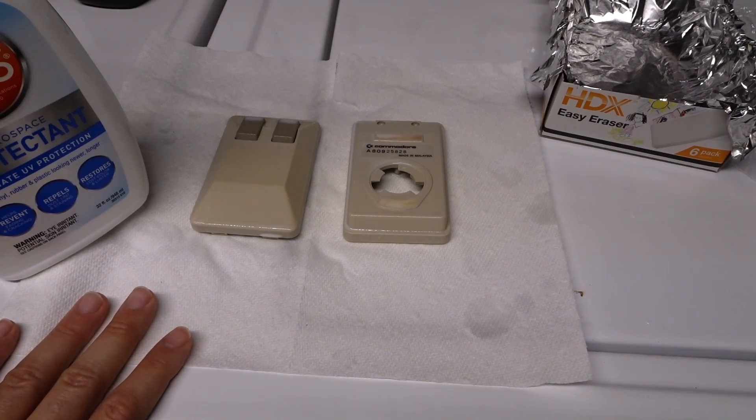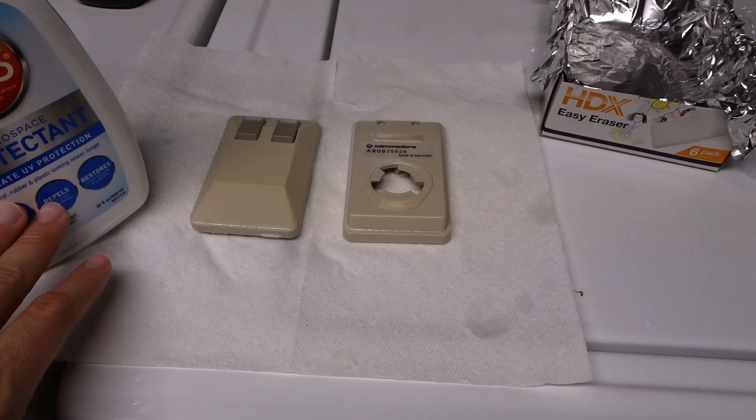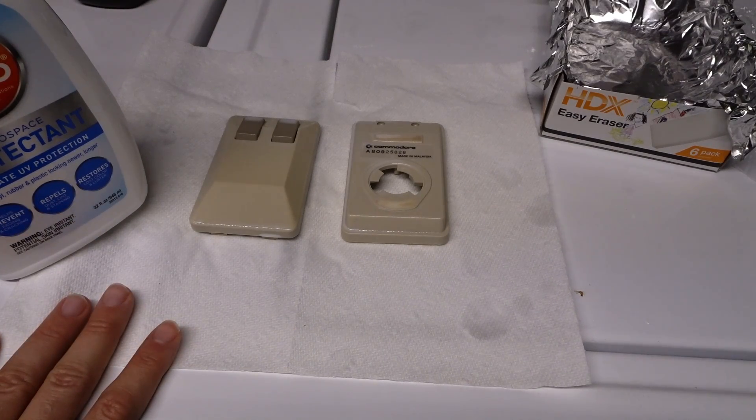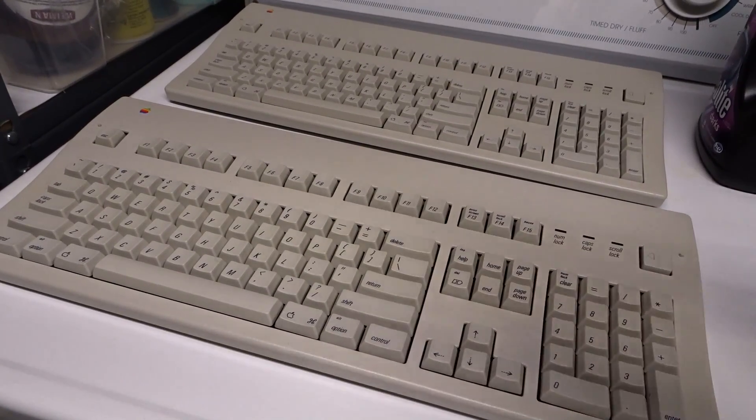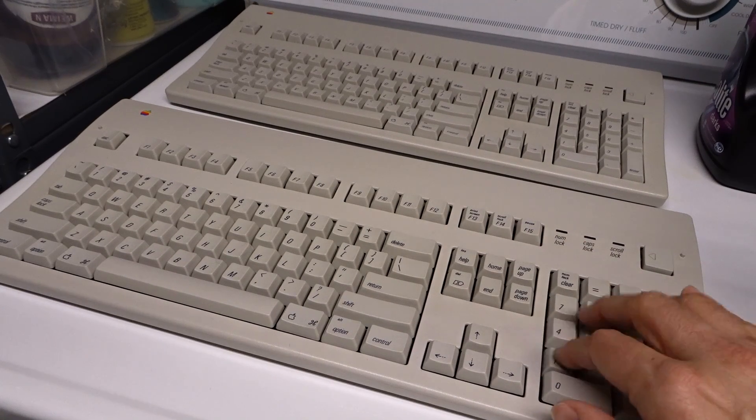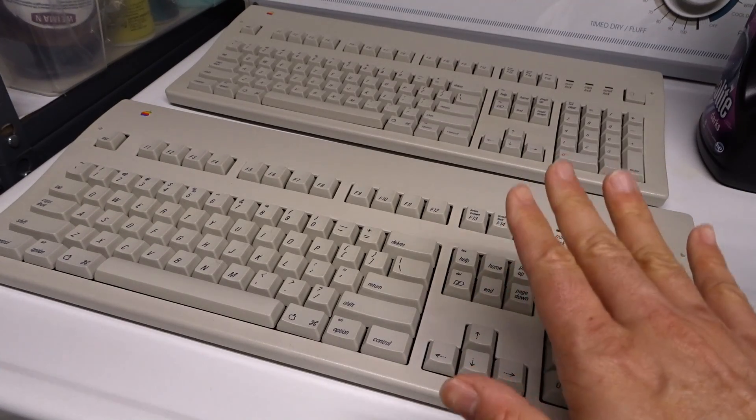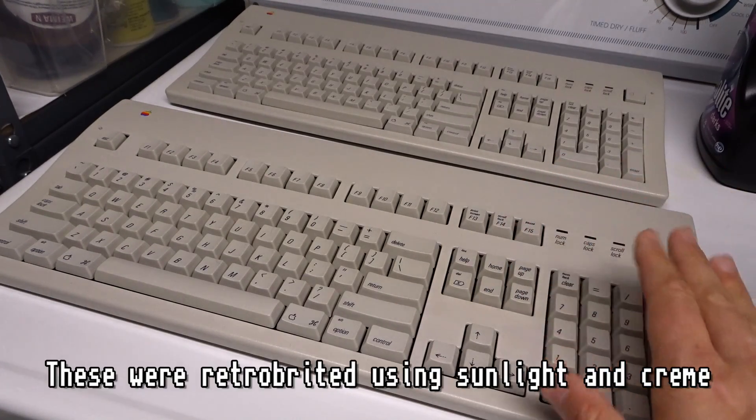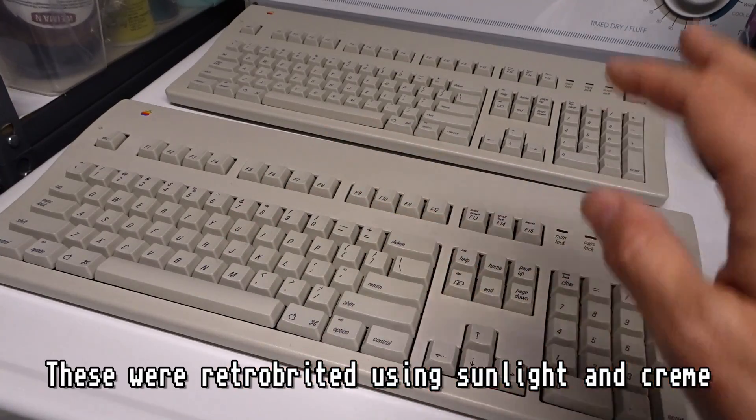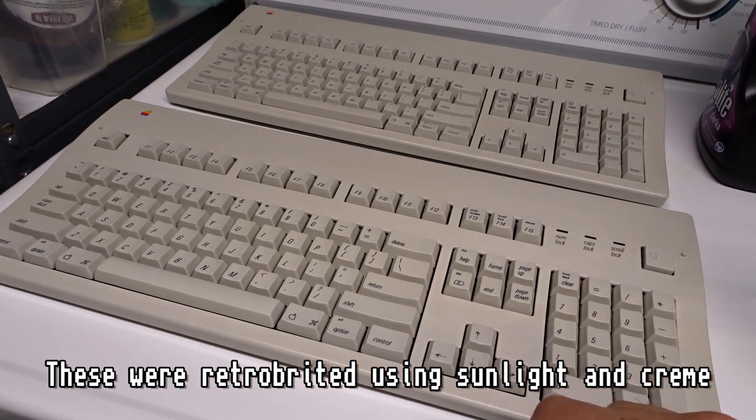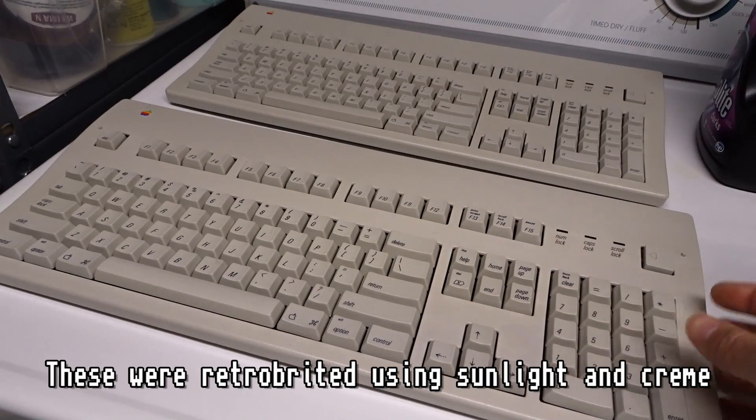I have a couple things I retrobrited over a year ago, they were very yellow, I have applied this post-retrobrite and neither of them have re-yellowed. Here are two Apple extended keyboard IIs. They were both very yellowed because you know Apple's ABS plastic, and the spacebar here very much yellow, not the PBT keys.